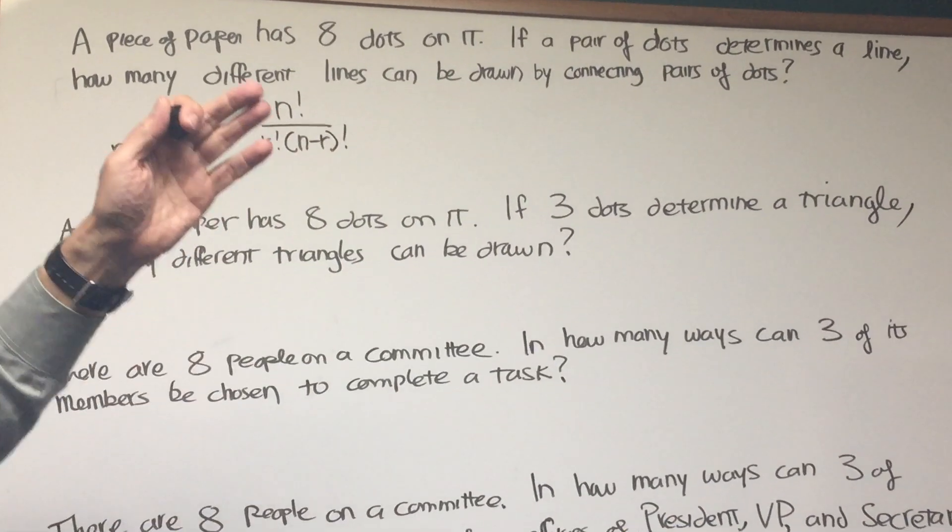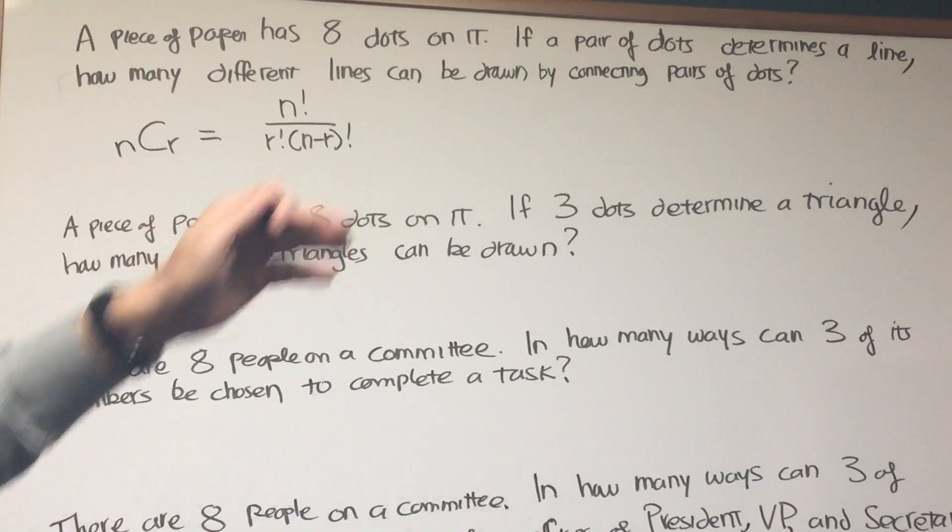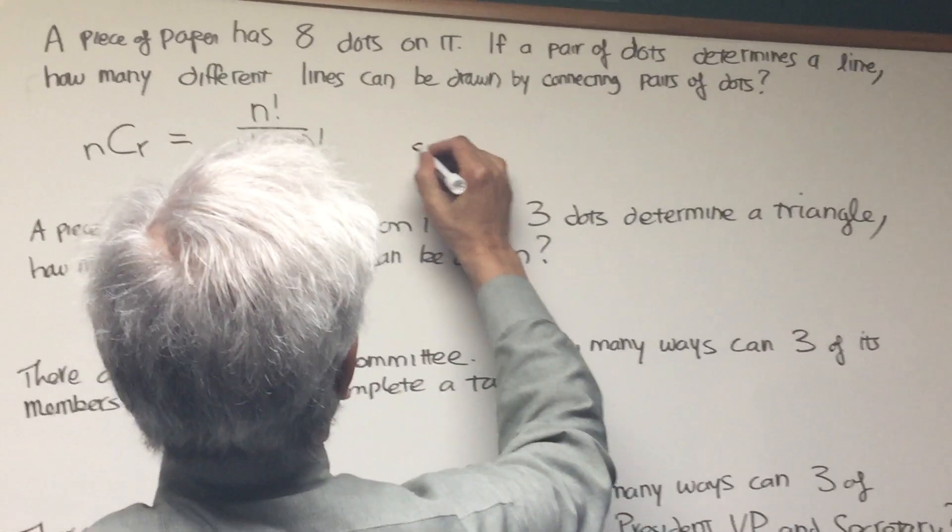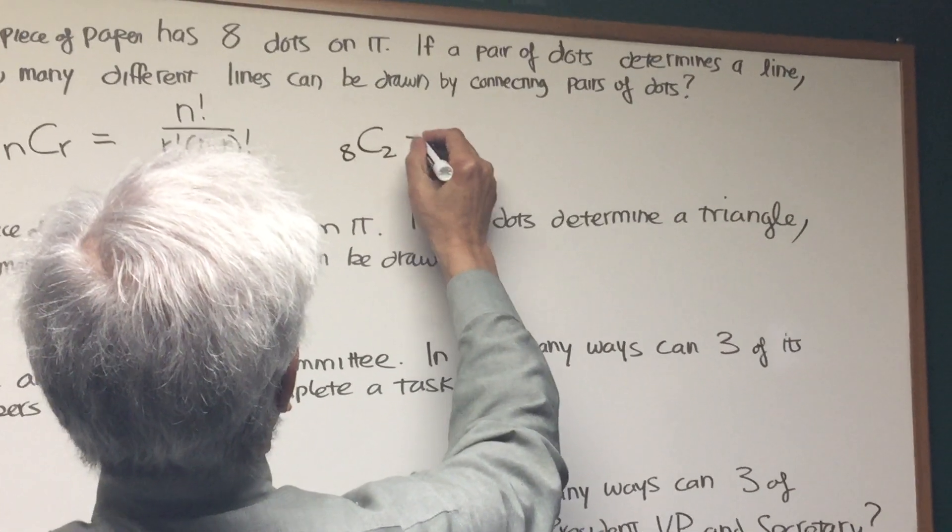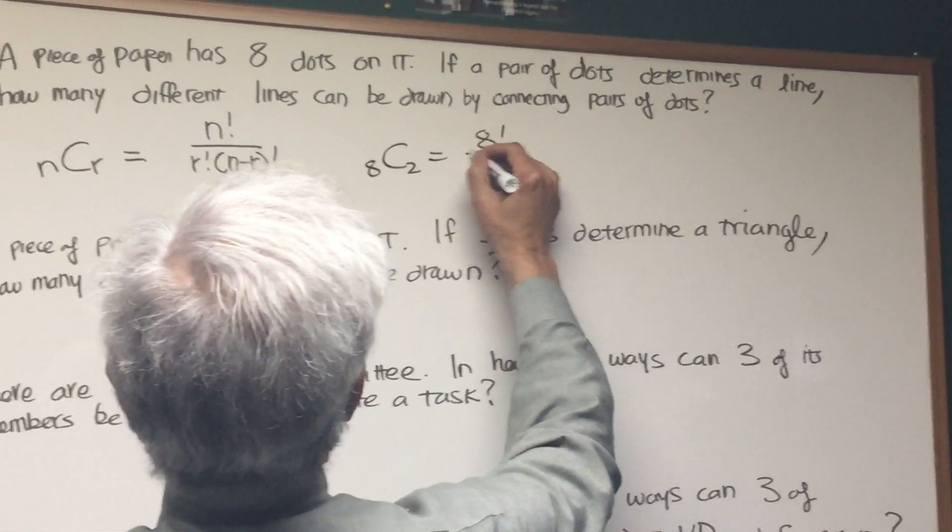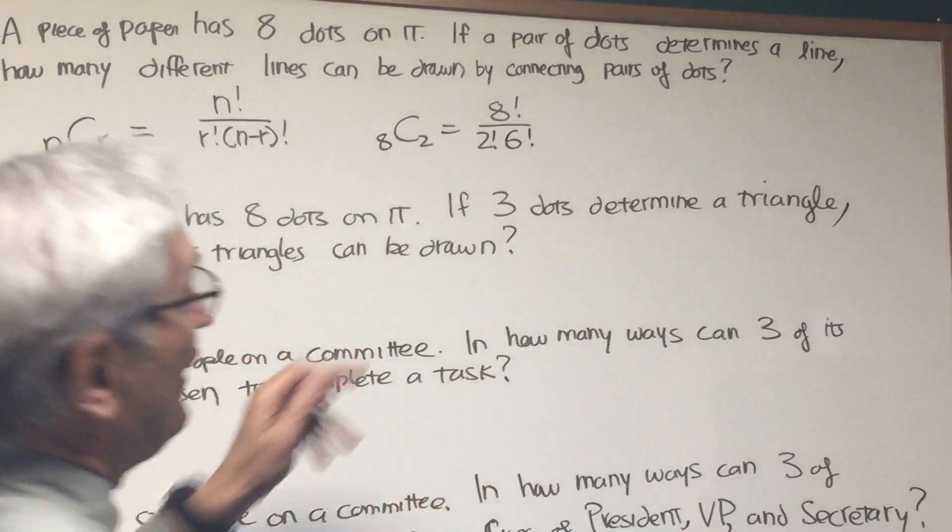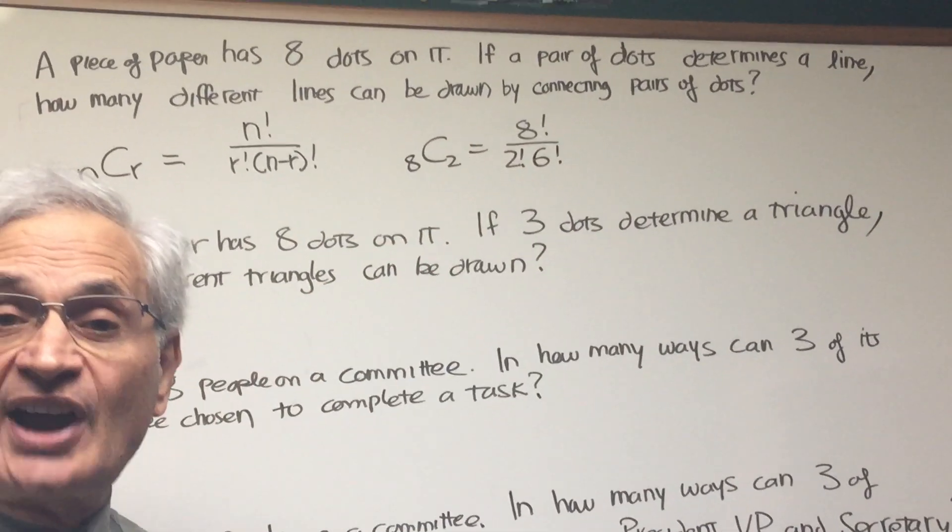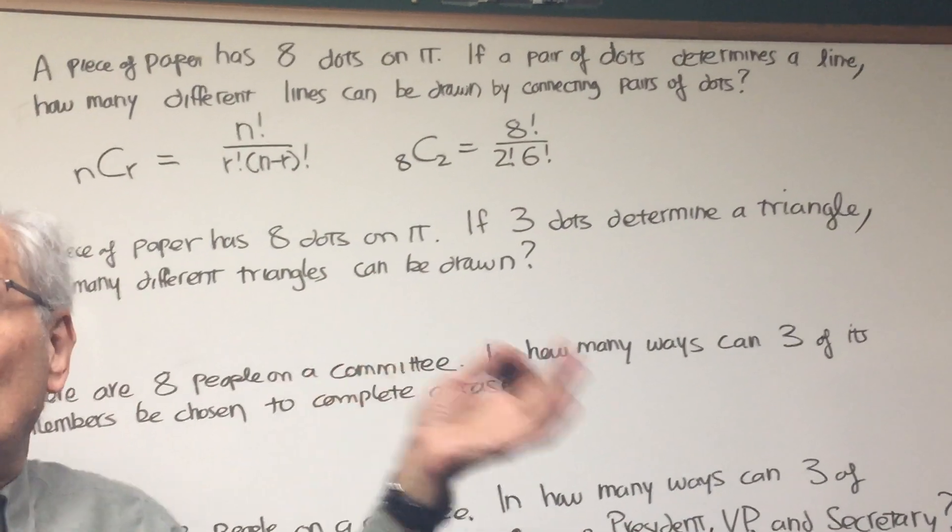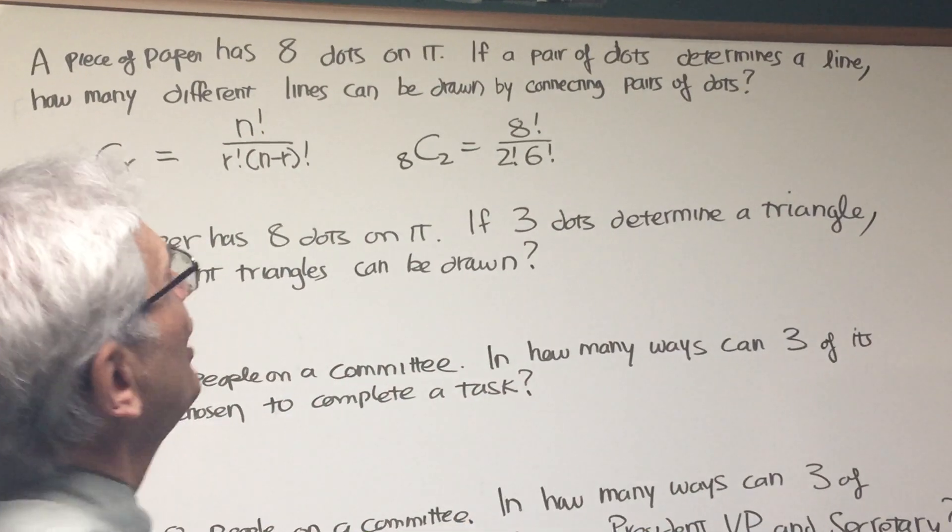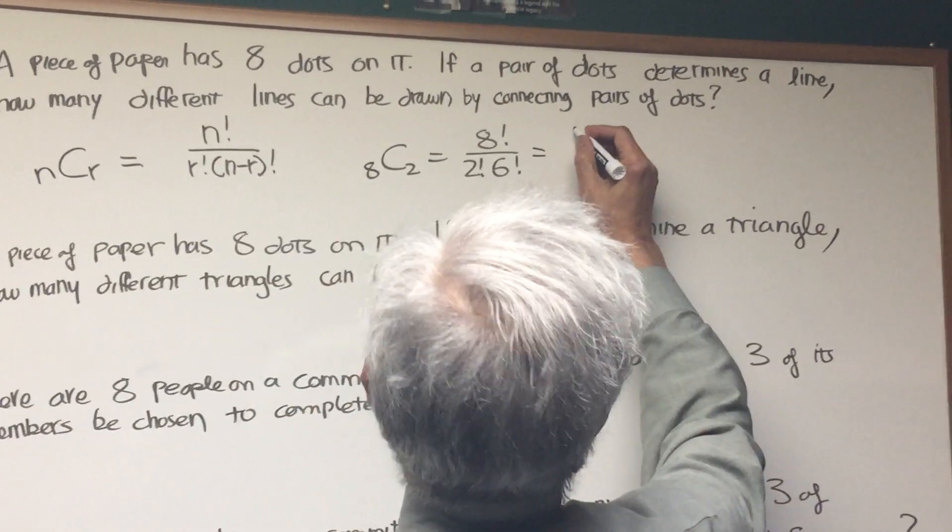So in this case, we want eight dots. We want to choose two of them. It's eight choose two. This is eight factorial over two factorial times eight minus two factorial, which is six factorial. The two factorials in the denominator always add up to the factorial in the numerator, which is very convenient.